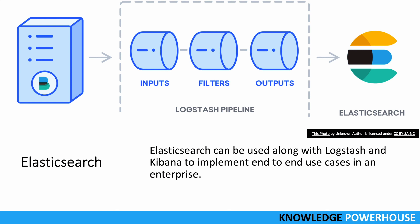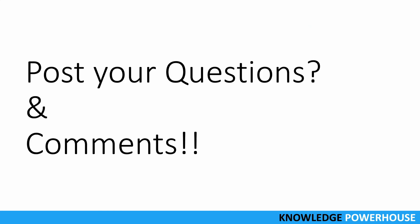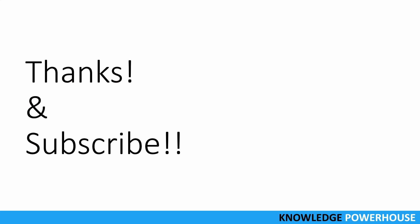Logstash is used as an input stream, Elasticsearch is used for storage and search, and Kibana is used for data visualization in dashboards. Together these three tools are called the Elastic Stack or ELK Stack. That's all — if you have further questions, post them as comments in our channel, watch more videos to learn about system design and architecture. Thank you and have a great day.